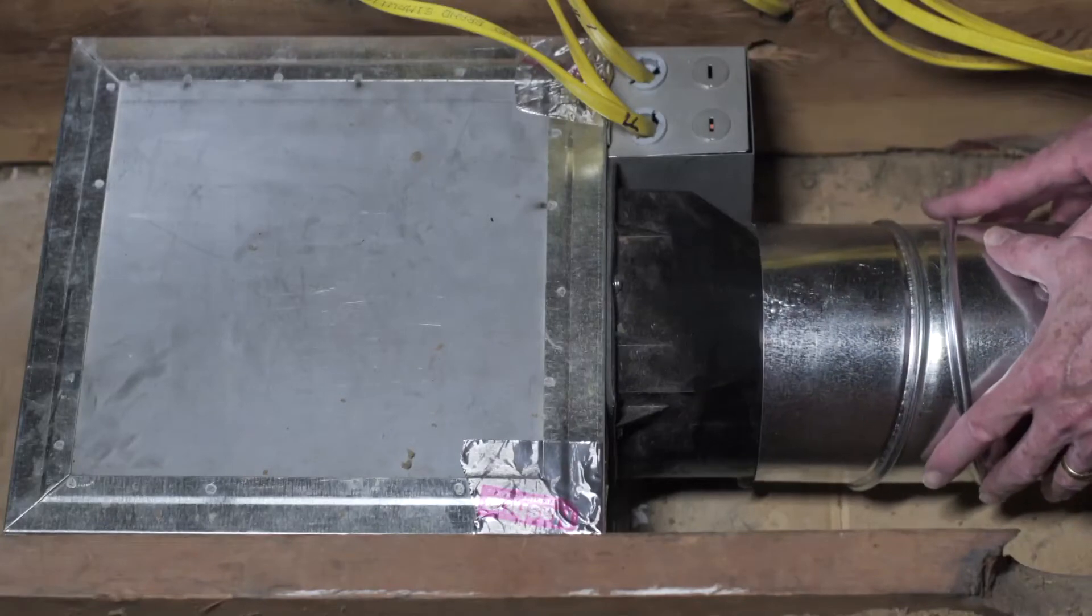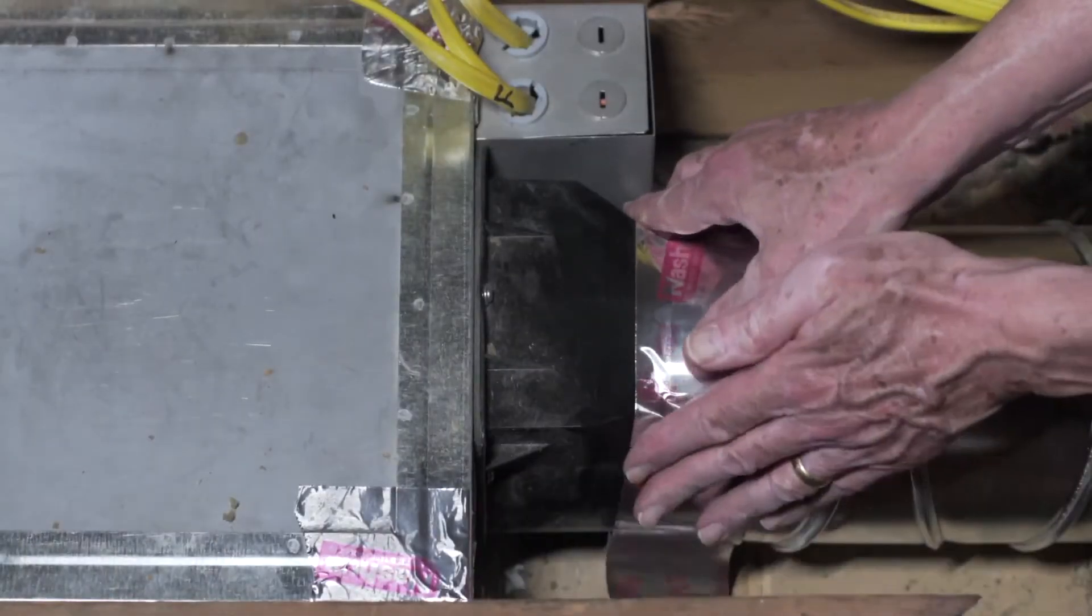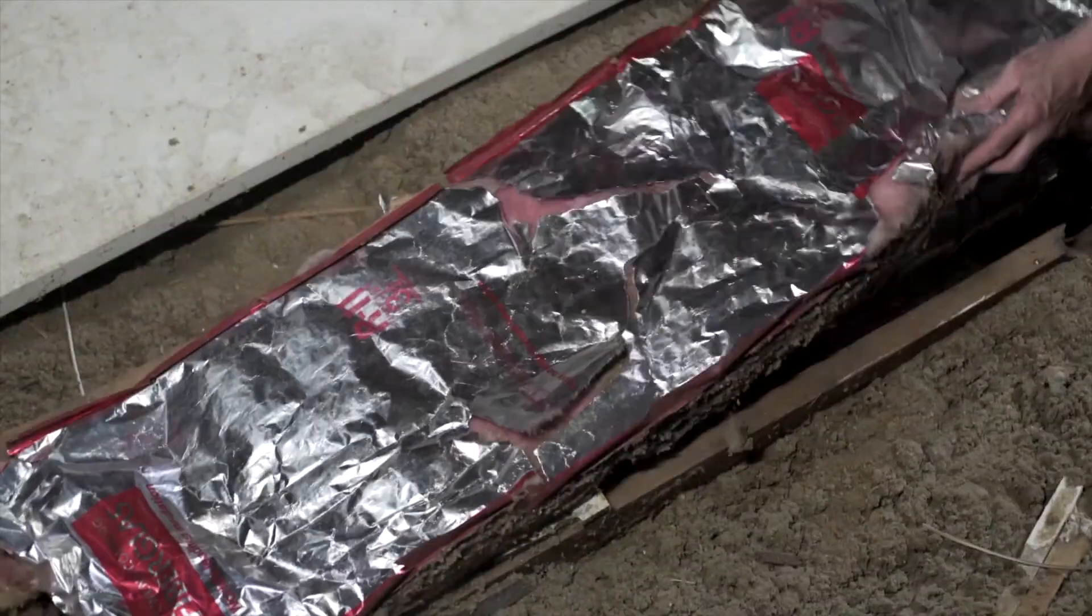Once the housing is secure, connect the ducting to the collar assembly using tape or a screw clamp. It is recommended to wrap or place insulation around the ducting.